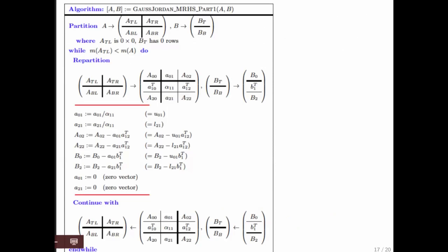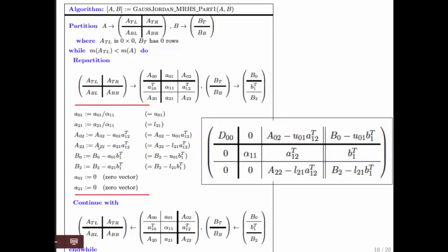So here, then, is an algorithm that works with multiple right-hand sides simultaneously, where we view the right-hand sides as a matrix B. These are the updates that must happen. Here, you notice that we are computing the multipliers. Here, we update the matrix A and B.